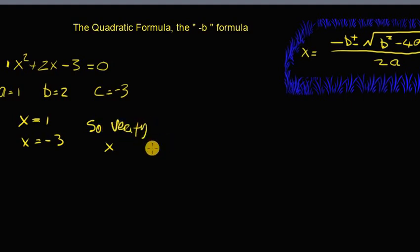I'm going to get 1 squared plus 2 times 1 minus 3, and indeed that does equal 0. So that's proven.